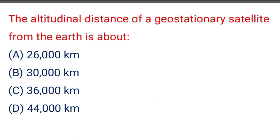Next question: the altitudinal distance of the geostationary satellite from the earth is above — option A: 26,000 km, option B: 30,000 km, option C: 36,000 km, option D: 44,000 km. The correct answer is option C: 36,000 km.